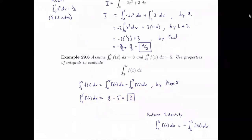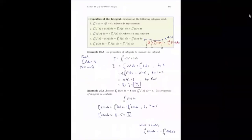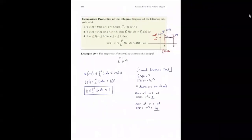One other identity to keep in mind: if we take the definite integral of f of x dx from a to b and flip the order of the limits of integration, it makes the integral negative. We'll see why this is the case later on, but it's a useful preview for this section.